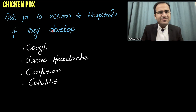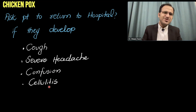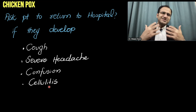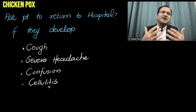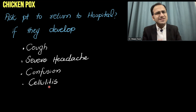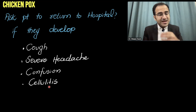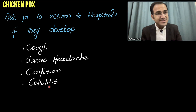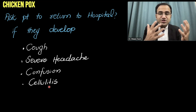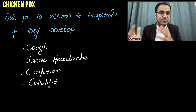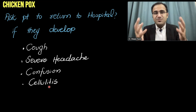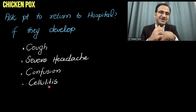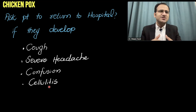Ask the patient to return to hospital if they develop cough, severe headache, confusion, or cellulitis. When you treat a child or adult with chickenpox and send them home as an OPD case, tell them to return if they develop cough — because pneumonia is a common complication — or if confusion develops, or if they develop cellulitis due to secondary bacterial infection.